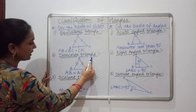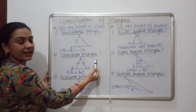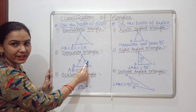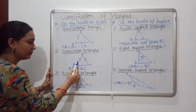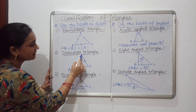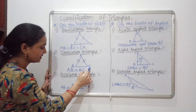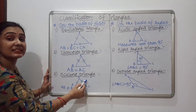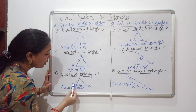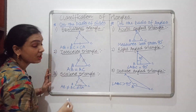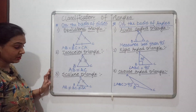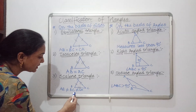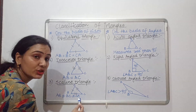Now comes isosceles triangle. In an isosceles triangle, two sides of a triangle are equal, meaning AB is equal to AC. In a scalene triangle, no sides are equal.